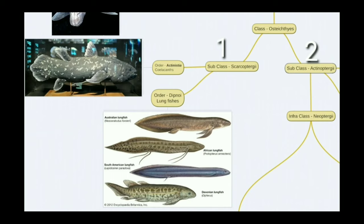Class Osteichthyes has two subclasses: Sarcopterygii and Actinopterygii. Sarcopterygii do not have rays and spines in their pectoral, pelvic, dorsal, and caudal fins, whereas Actinopterygii have rays and spines in those fins. Sarcopterygii have two orders: Actinistia and Dipnoi. Order Actinistia — it is believed the first land vertebrate evolved from coelacanths — are endangered species found in the Indian Ocean. Order Dipnoi contains the lungfishes.